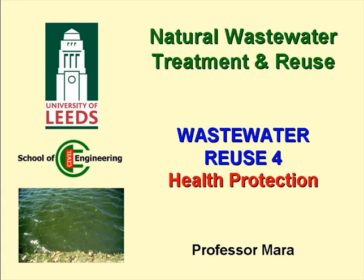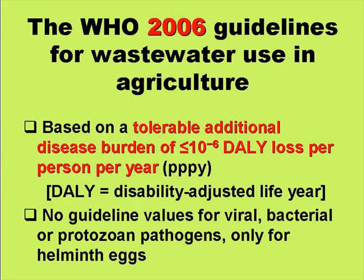This presentation on wastewater use in agriculture is concerned with the protection of human health. The 2006 guidelines of the World Health Organization are based on a tolerable additional disease burden of no more than 10 to the minus 6 DALY loss per person per year, where DALY stands for Disability Adjusted Life Year. The new WHO guidelines don't contain any guideline values for viral, bacterial, or protozoan pathogens — only for helminth eggs.